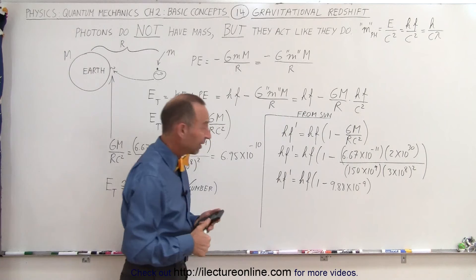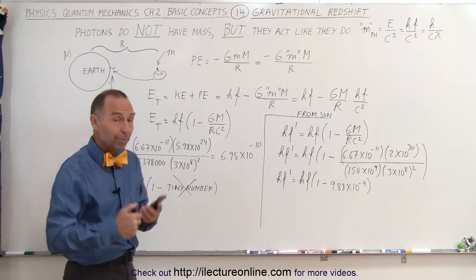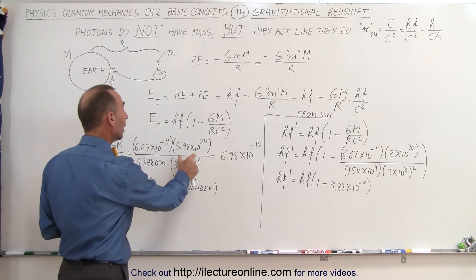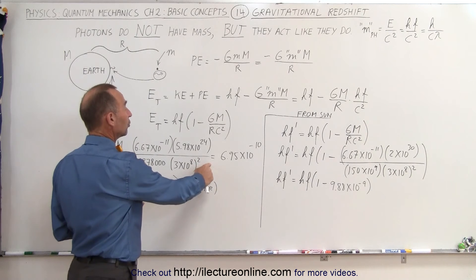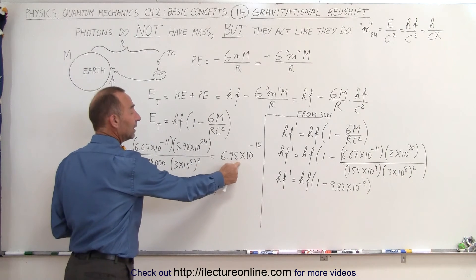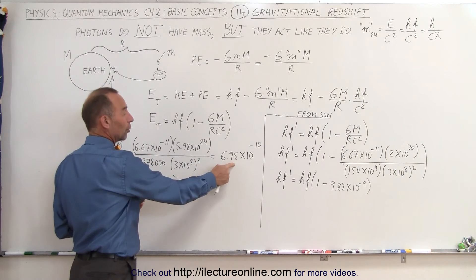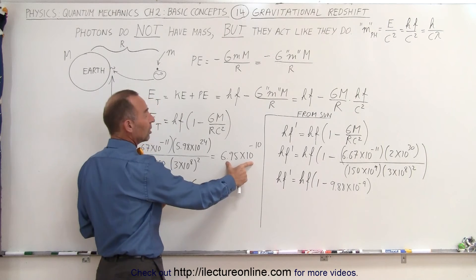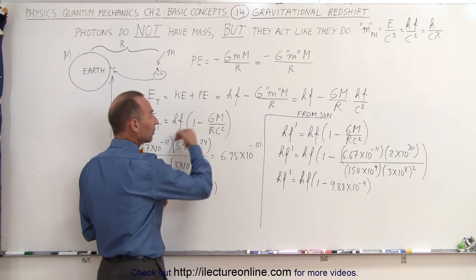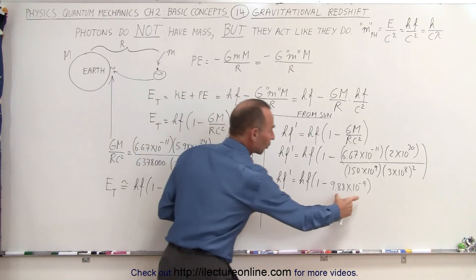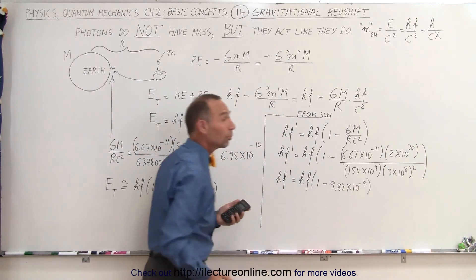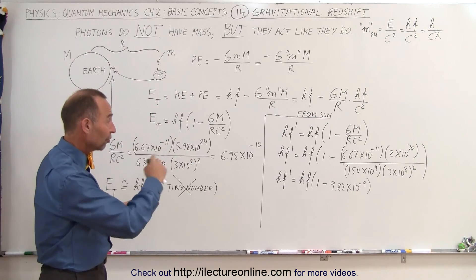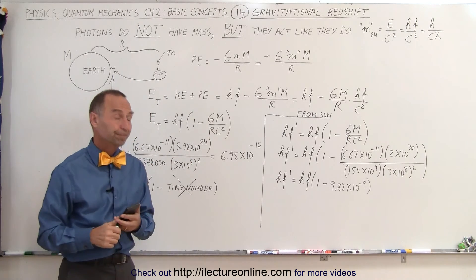That's still a really small number, but it's not as small as the energy loss for photons leaving the earth. To leave the earth, a photon loses a fraction of about 6.95 × 10⁻¹⁰ of its energy. Coming from the sun, the loss is about 9.88 × 10⁻⁹ — almost a factor of ten greater.